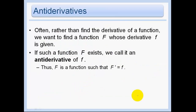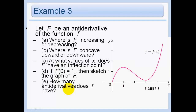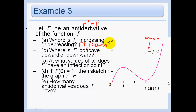Antiderivatives require us to go backwards — instead of finding a derivative, we find the antiderivative. We want to find the function such that its derivative brings us back to our original function. The antiderivative function is defined by a big F. So let F be an antiderivative; the given function is essentially the derivative. F is increasing where its derivative — the little f function — is positive, which happens from 0 on.